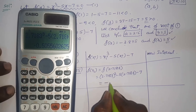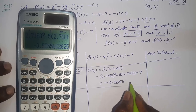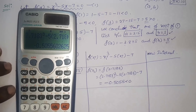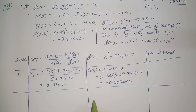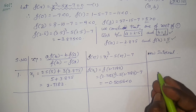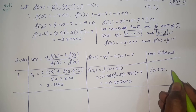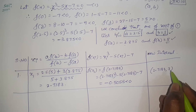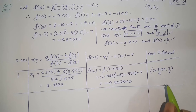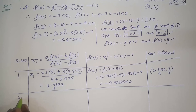I get f(2.7183) = -0.5055, which is negative. Since it is negative and the positive function value was at 3, the new interval becomes [2.7183, 3]. We take the new approximation value as a = 2.7183 and keep b = 3.